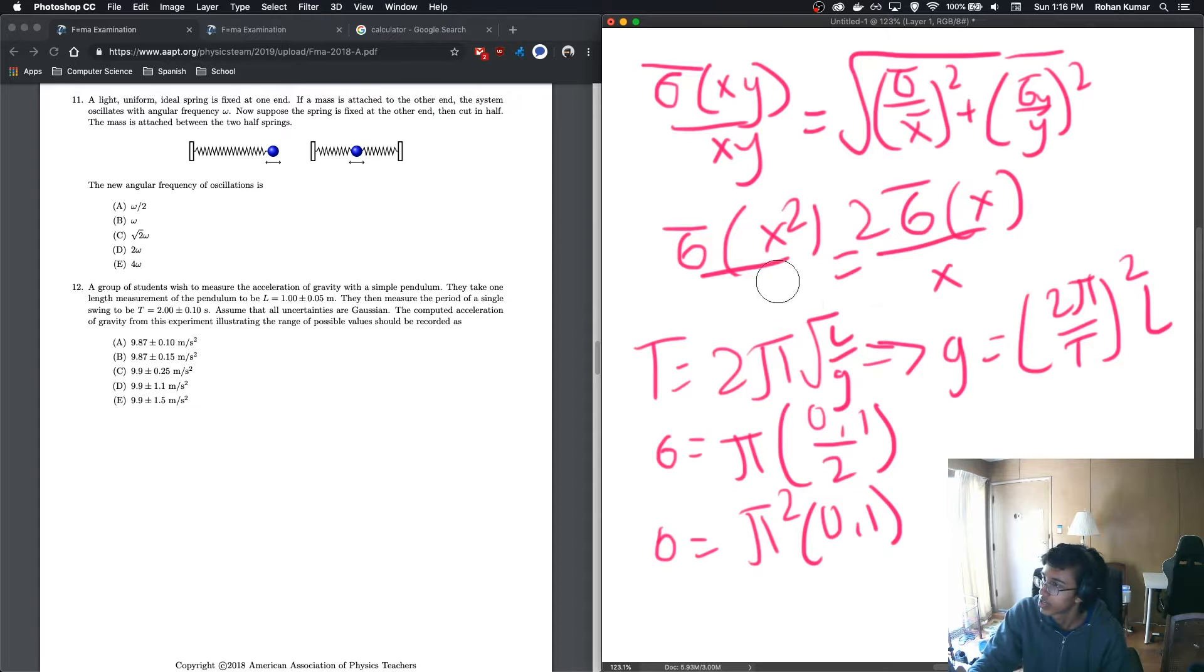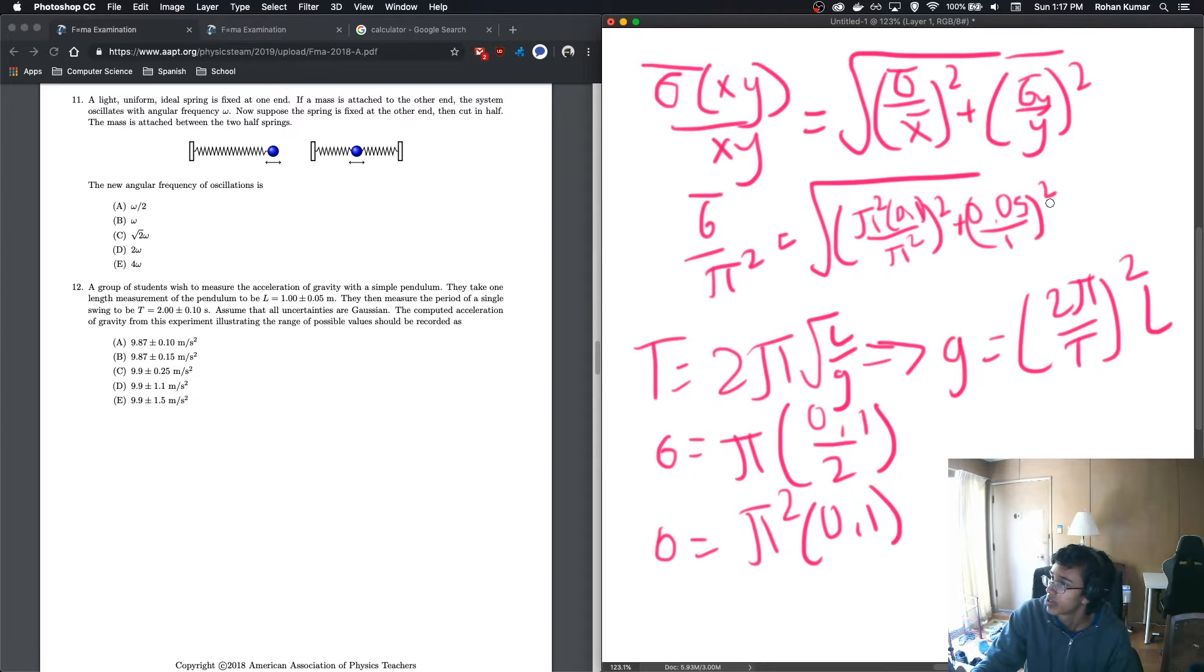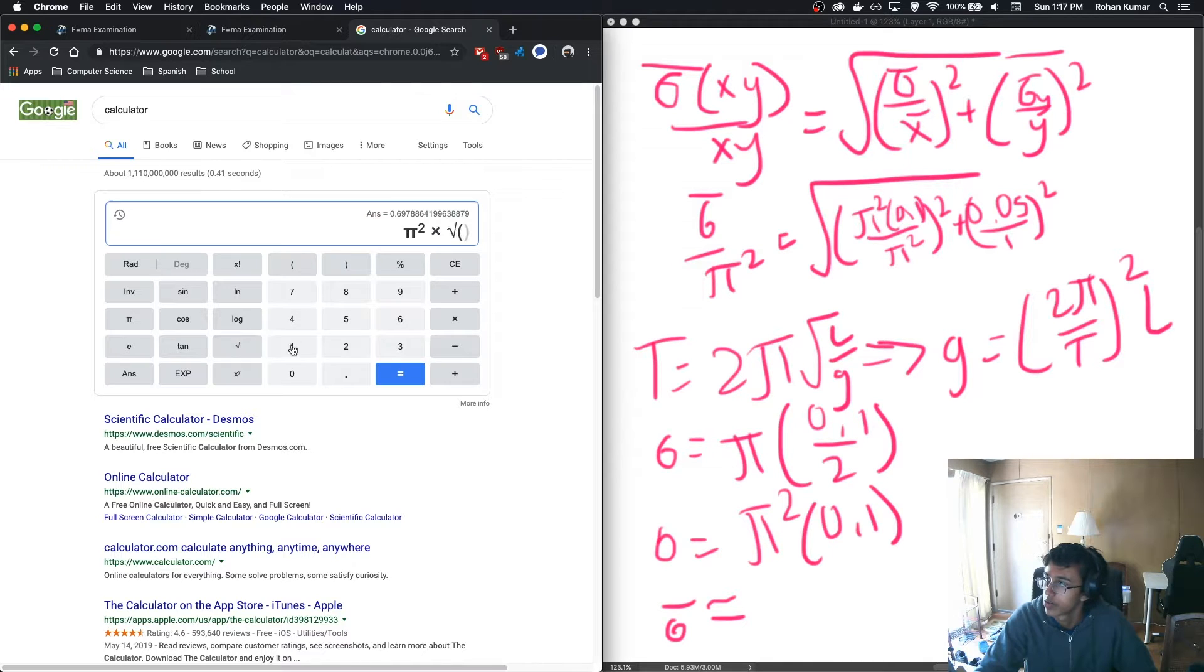So plugging all that in, let's just erase some unnecessary equations and let us write it in. Our uncertainty over pi squared is equal to the square root of pi squared times 0.1 over pi squared squared plus 0.05 over 1 squared. And this should give us that our uncertainty is, let us plug this into the calculator. Pi squared times the square root of 0.1 squared plus 0.05 squared.